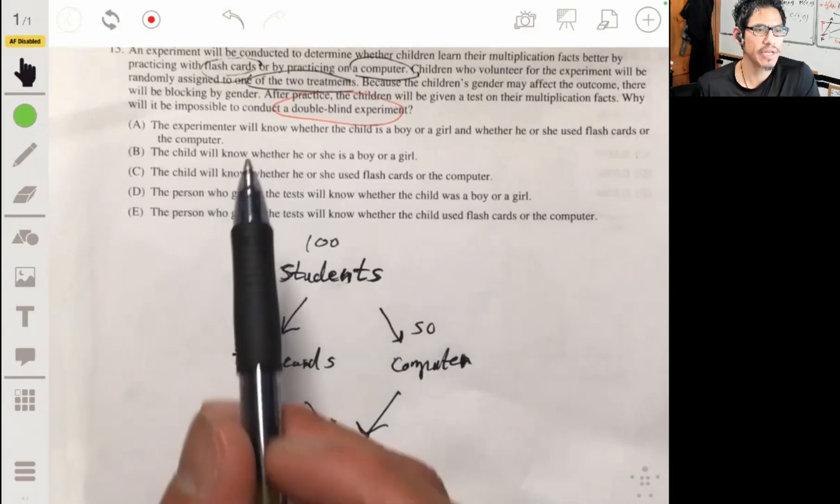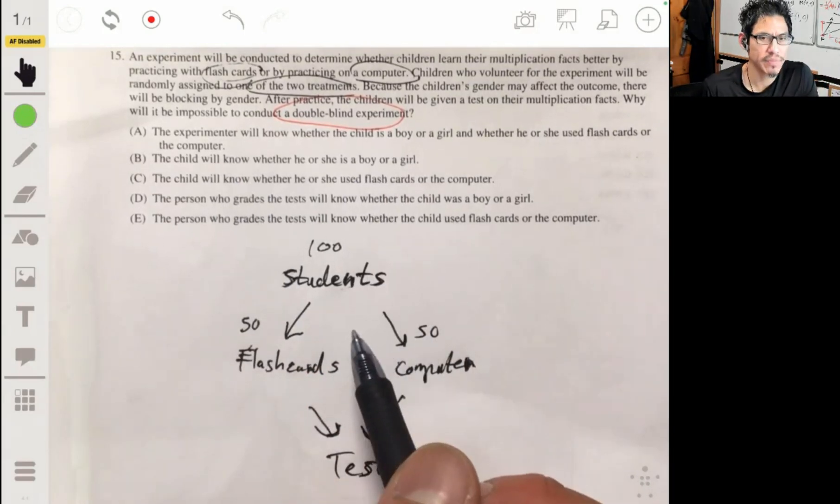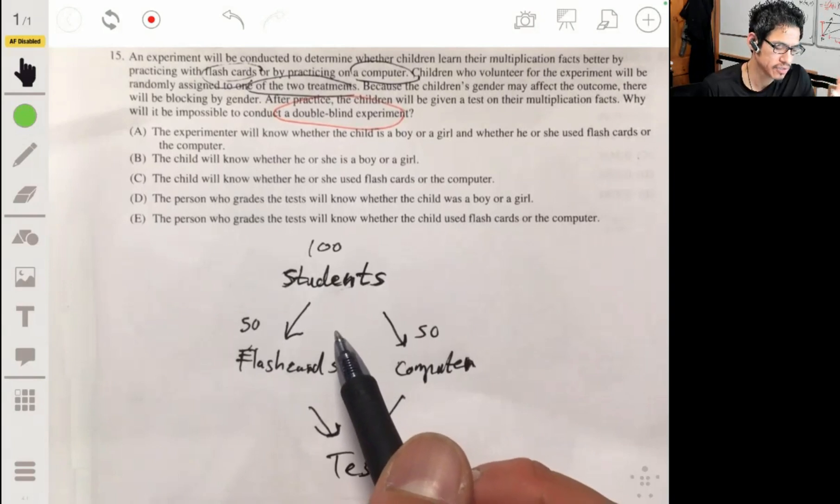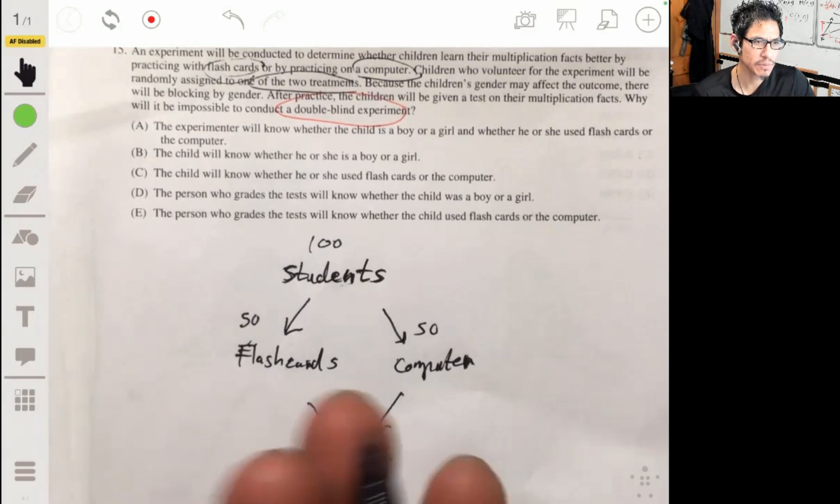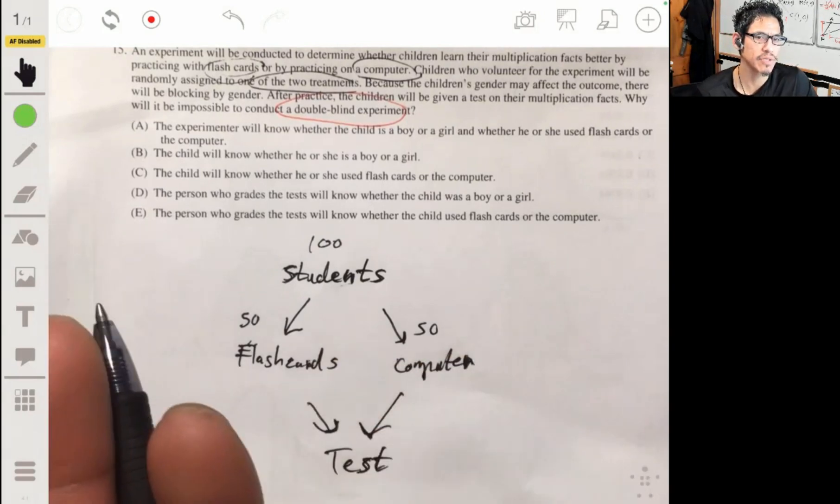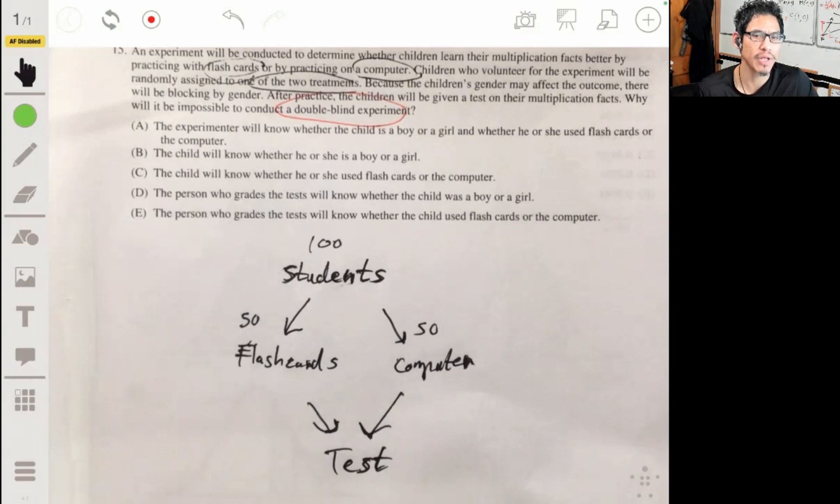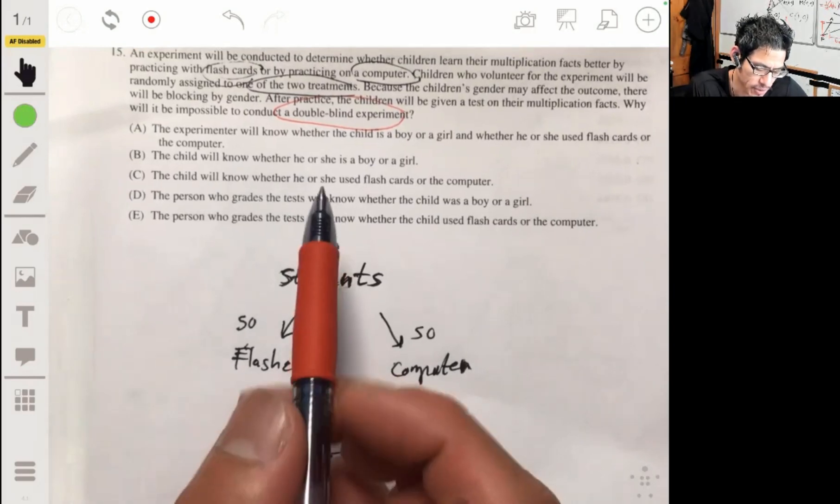Now, remember, a double-blind is when the experimenter and the subjects, in this case, the kids, don't know what treatment they're getting. So it's possible to have it set up so that the experimenter doesn't know which group is doing the flashcards and which group does it with the computer. But the kids are not going to be able to not know. I mean, they're going to know if they're practicing with flashcards or a computer, that's just part of it. So they're going to know what group they're in, and so it cannot be double-blind.